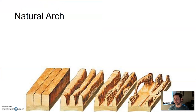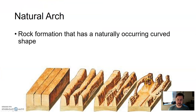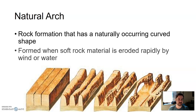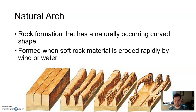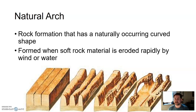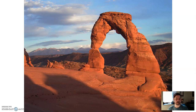Natural arches — again, material being taken away. A natural arch is a naturally occurring curved arch shape, sometimes called bridges in some areas, formed by wind and water erosion as softer rock erodes away. Sedimentary rock is where these are more common — softer rock is easier to weather and erode. Here's one of the most famous natural arches in Arches National Park in Utah, just outside of Moab, Utah.